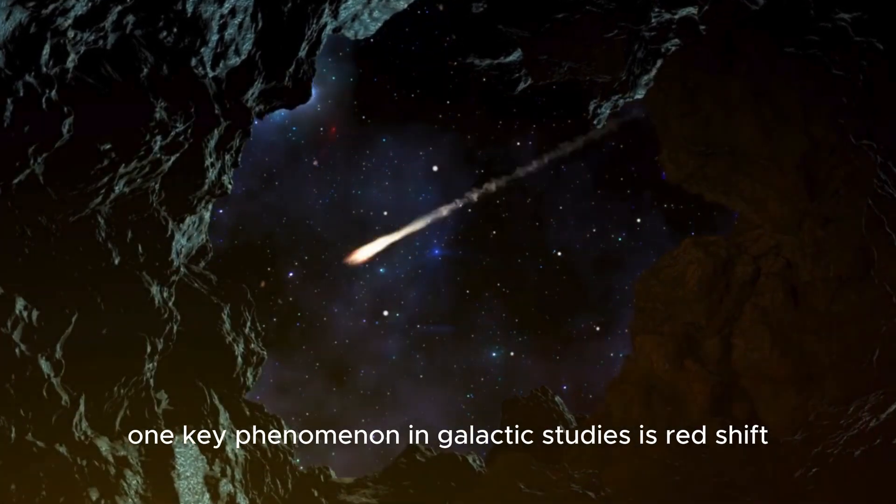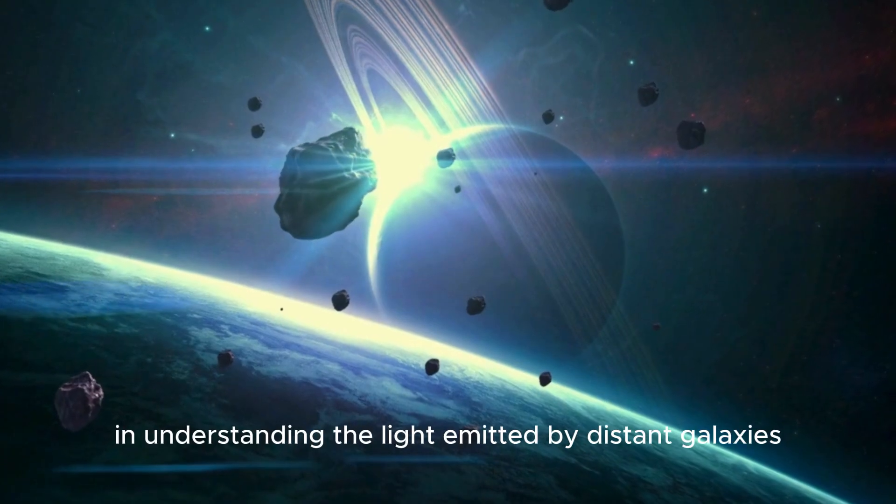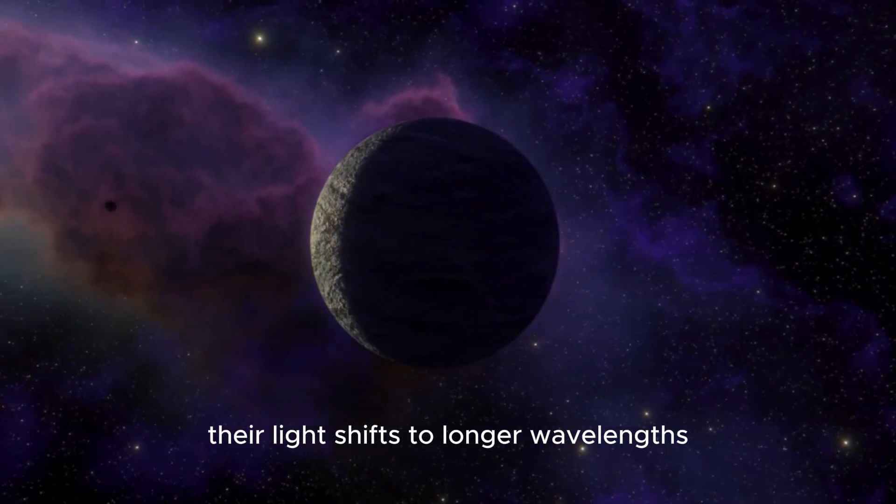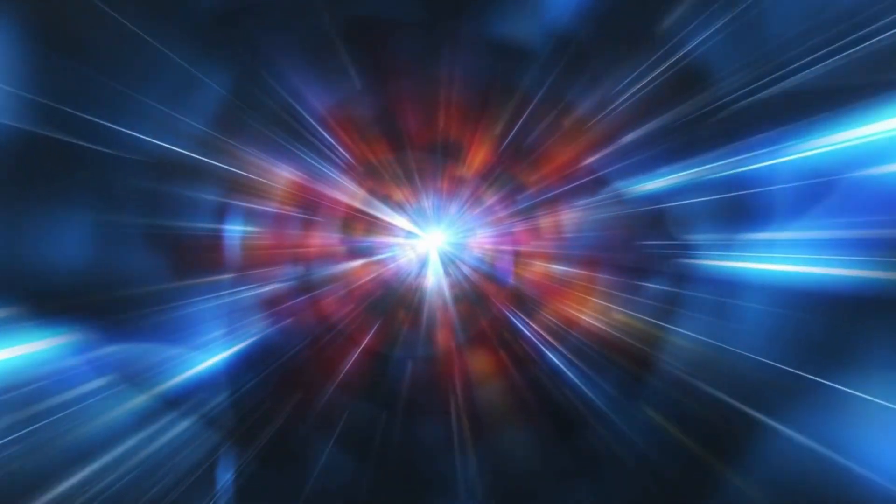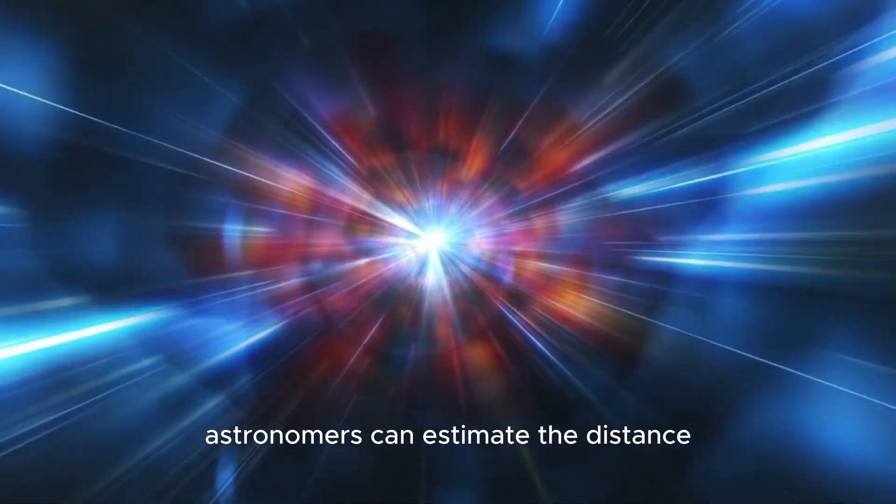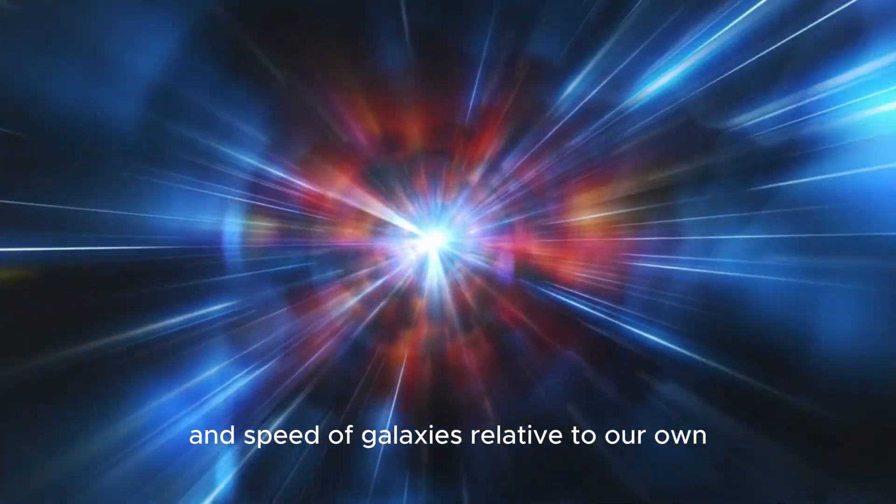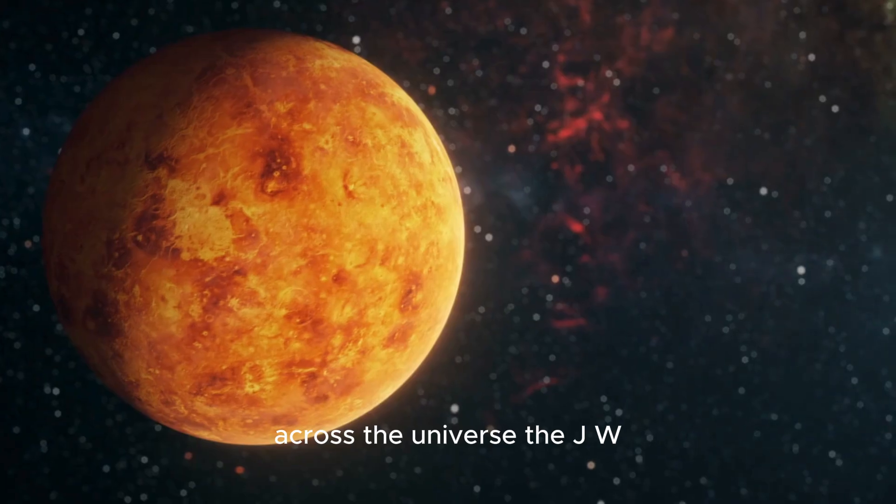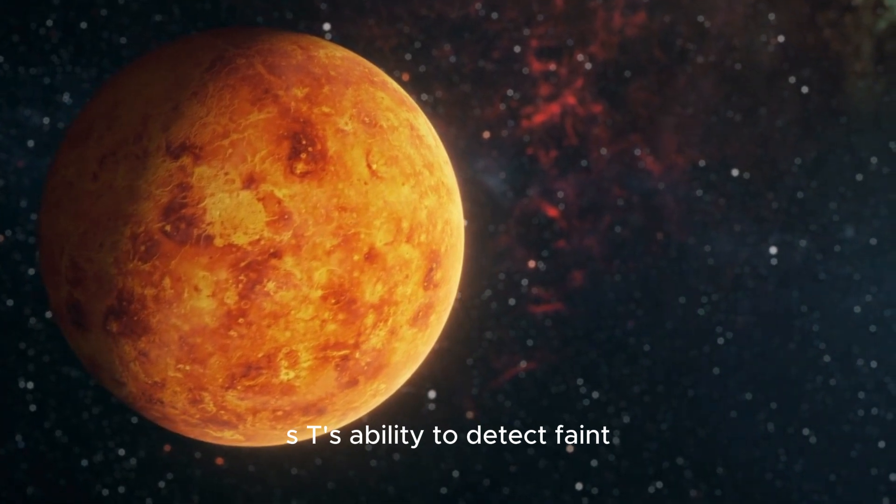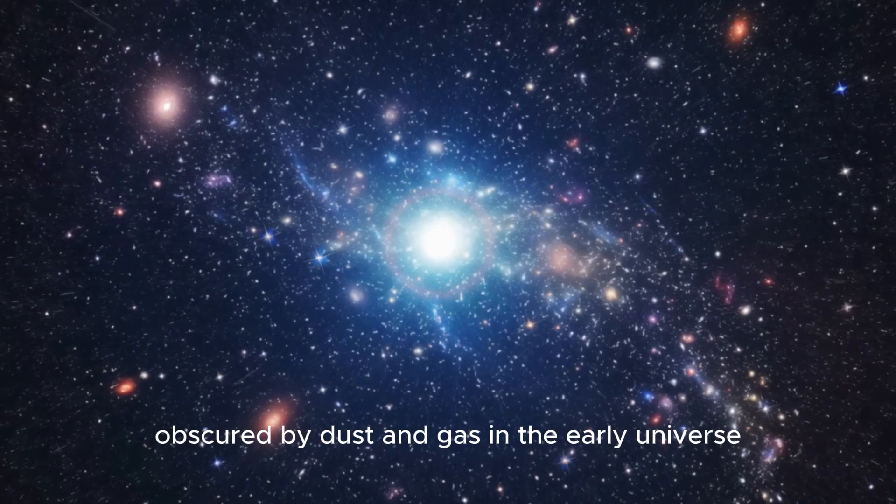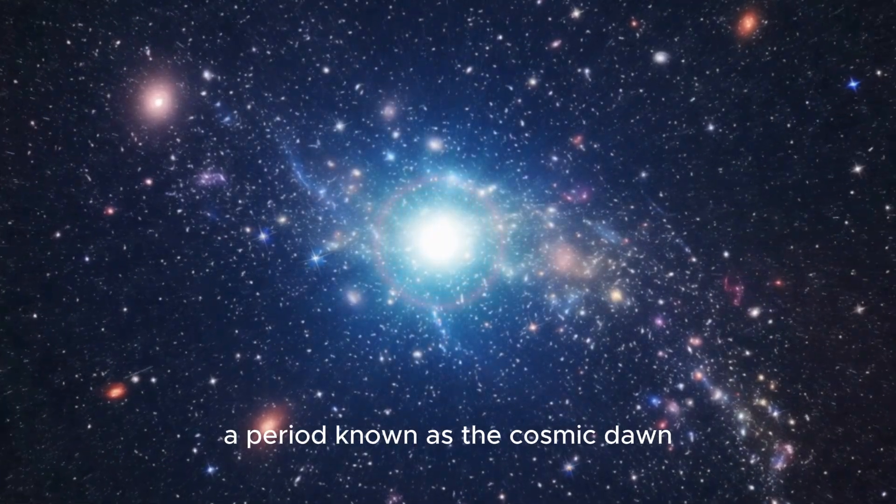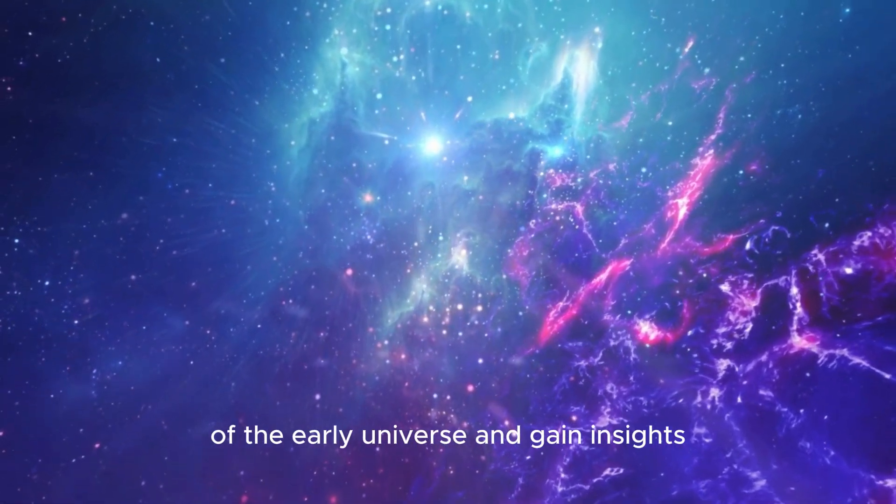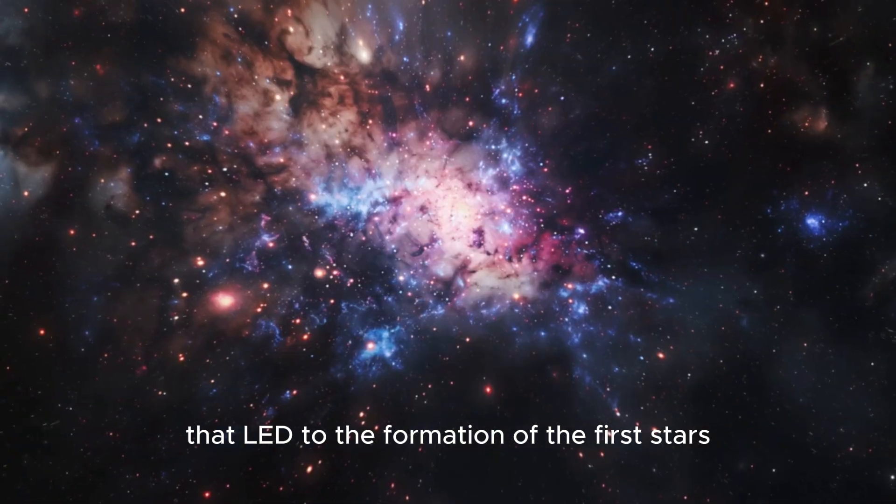One key phenomenon in galactic studies is redshift, which plays a crucial role in understanding the light emitted by distant galaxies. As galaxies move away from Earth, their light shifts to longer wavelengths, a phenomenon known as redshift. By measuring the degree of this shift, astronomers can estimate the distance and speed of galaxies relative to our own. This data is fundamental for developing models of cosmic expansion and understanding the distribution of galaxies across the universe. The JWST's ability to detect faint infrared signals allows it to observe galaxies obscured by dust and gas in the early universe, a period known as the cosmic dawn. By studying the light from these distant galaxies, astronomers can trace the chemical makeup of the early universe and gain insights into the processes that led to the formation of the first stars and galaxies.